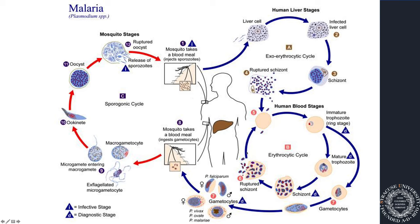This asexual reproduction continues, but at some point the trophozoite undergoes gametocyte reproduction — sexual reproduction — changing the cycle to produce gametocytes. There are male and female gametocytes, and these gametocytes are what then get picked up by a mosquito. Perhaps a different mosquito picks up these gametocytes.